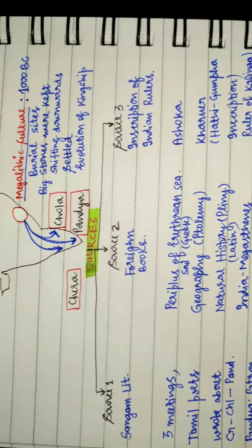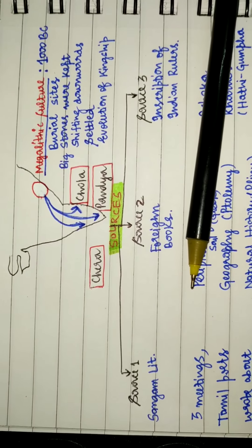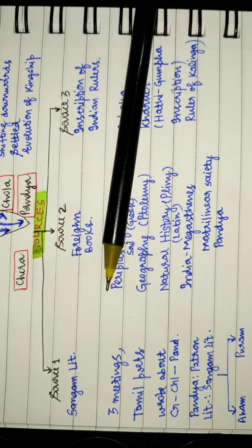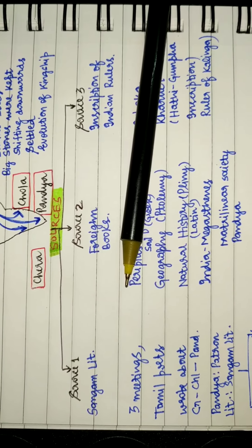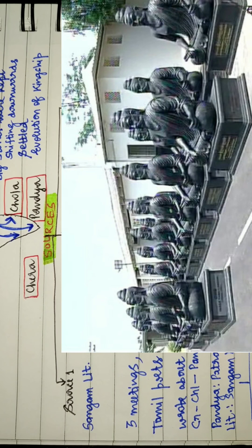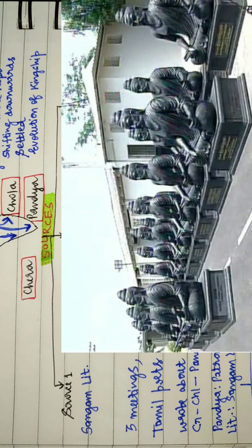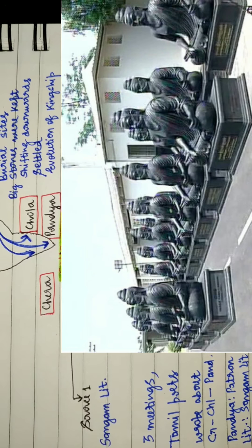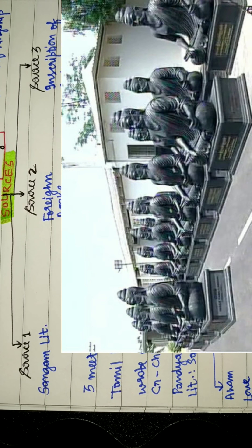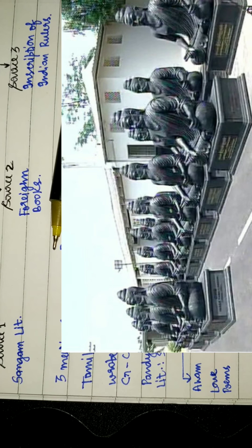Now the question arises, how have we known about these kingdoms? There are three prominent sources. The first source is when the Tamil poets used to meet in the assemblies where the Chera, Pandya, and Chola ministers were there.